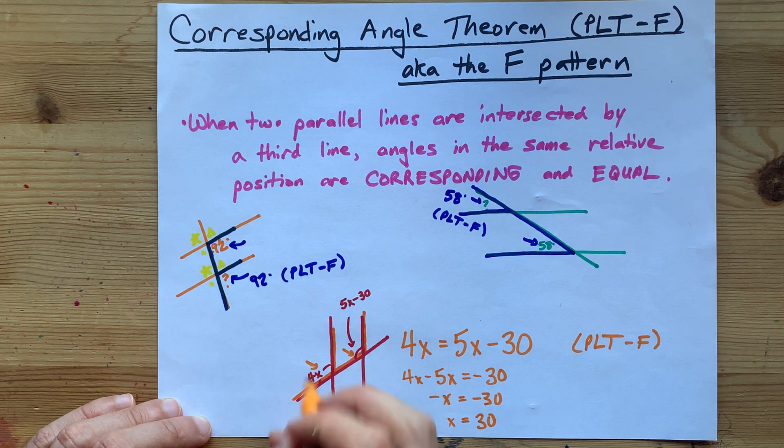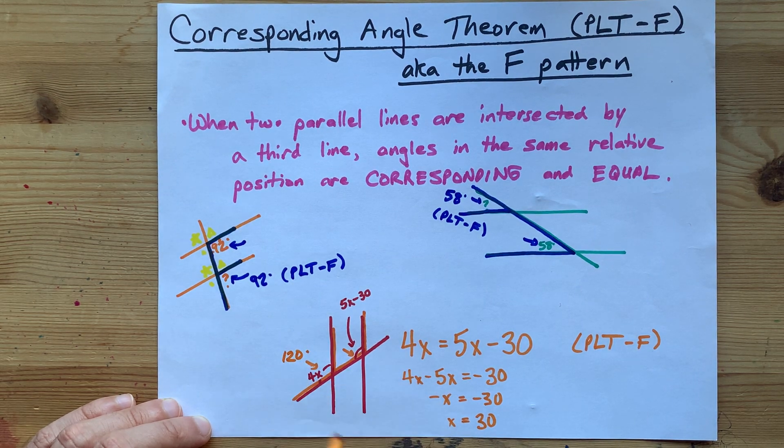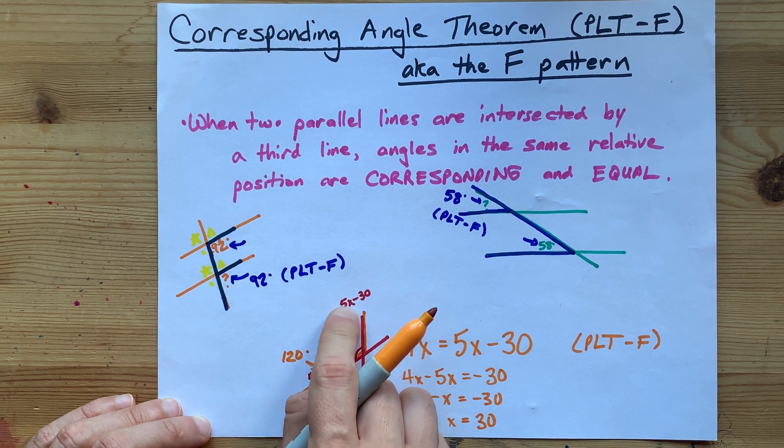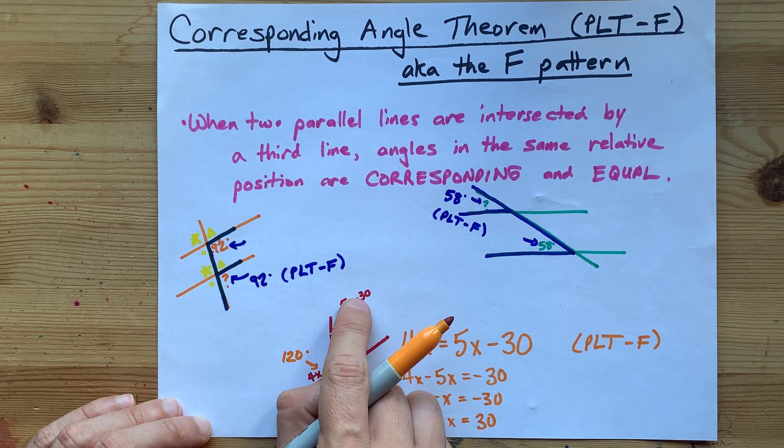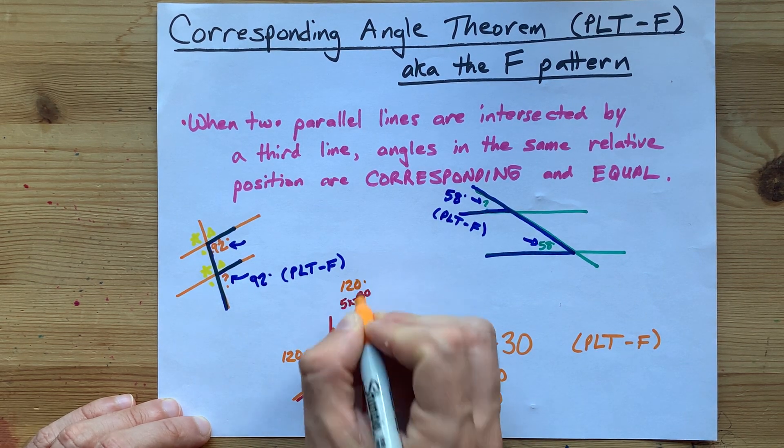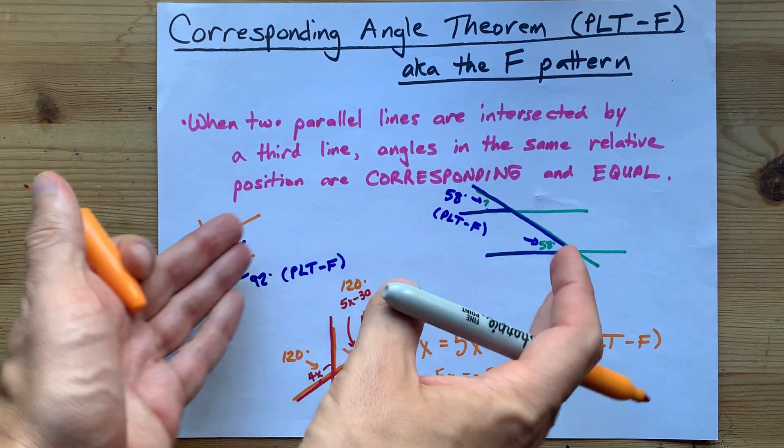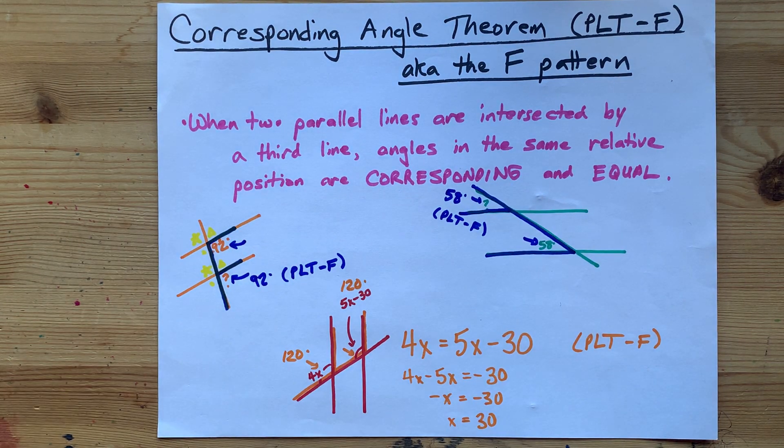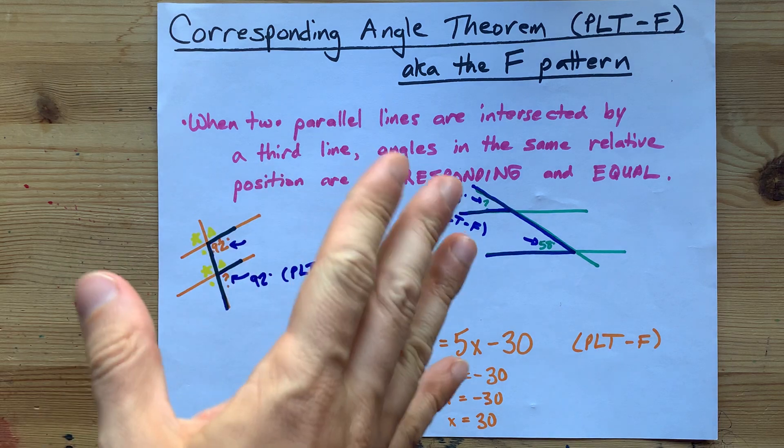4 times 30 would give me a 120 degree angle there. 5 times 30 is 150, minus an extra 30 would give me 120 degrees there. They are equal, just like corresponding angles should be. What a beautiful thing.